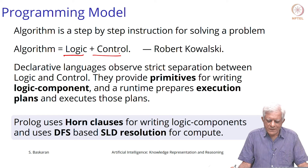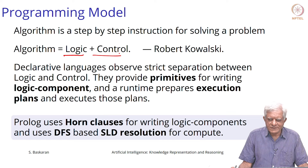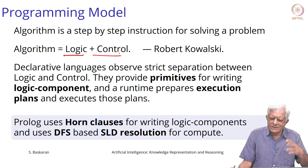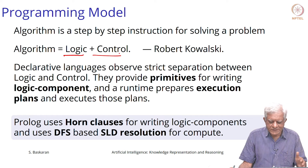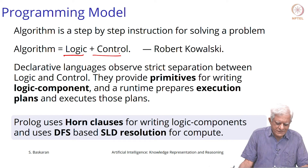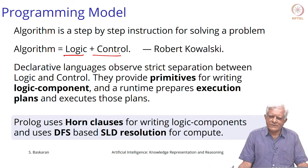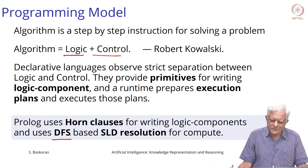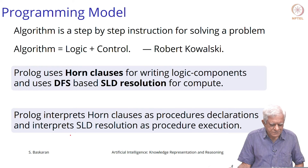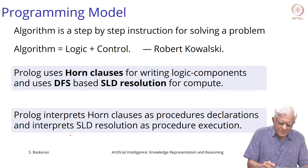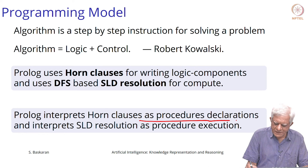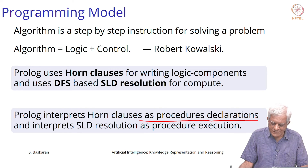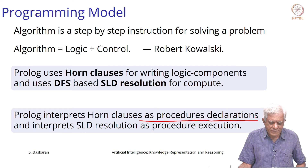In declarative logic programming, primitives are provided for writing the logic components, such as first order logic, and the runtime prepares an execution plan and executes it — so execution is not in the programmer's hands; an interpreter or inference engine does it. Prolog uses the Horn clause subset of logic because it is more efficient, and it performs depth-first search corresponding to SLD resolution for Horn clauses.